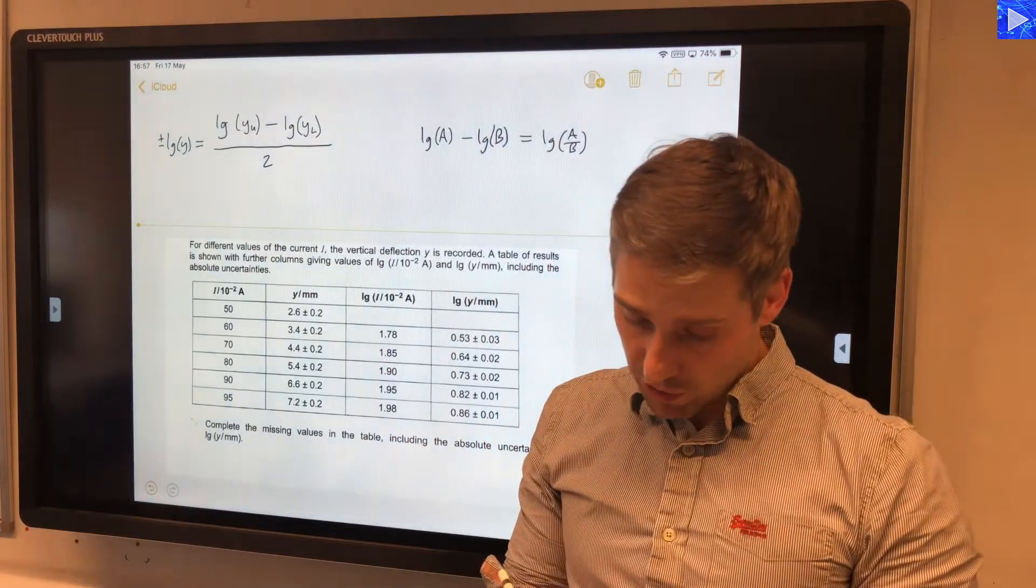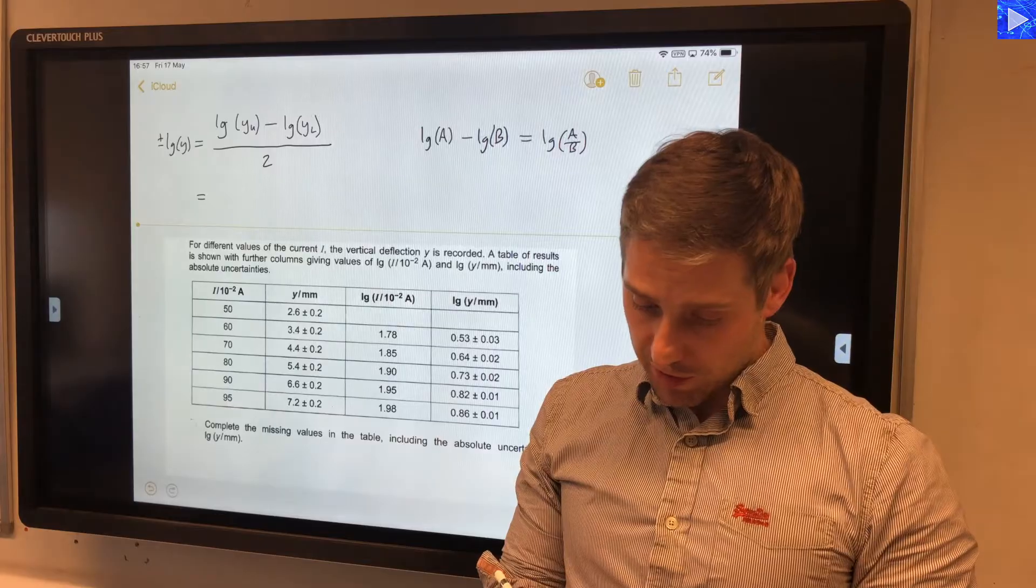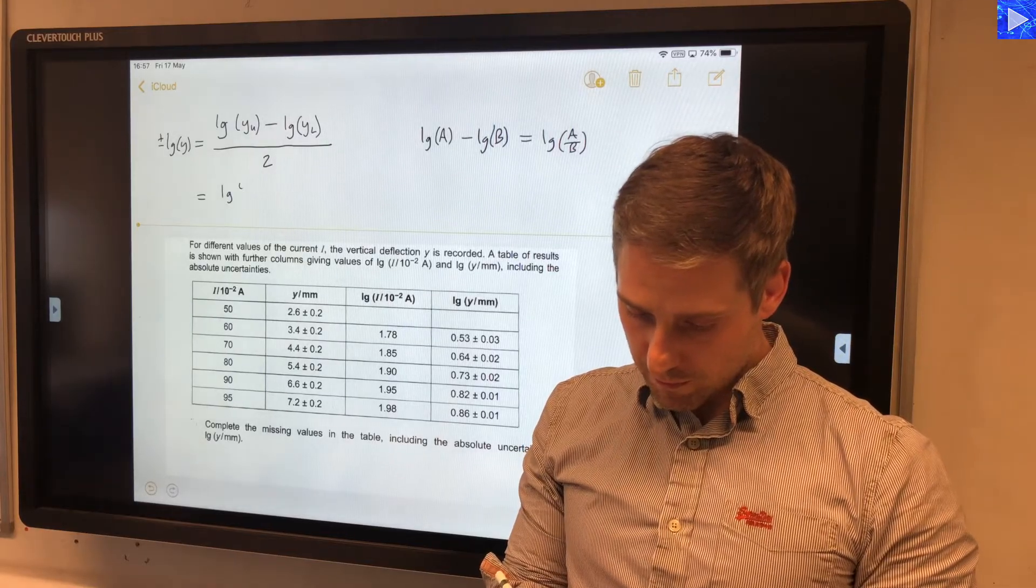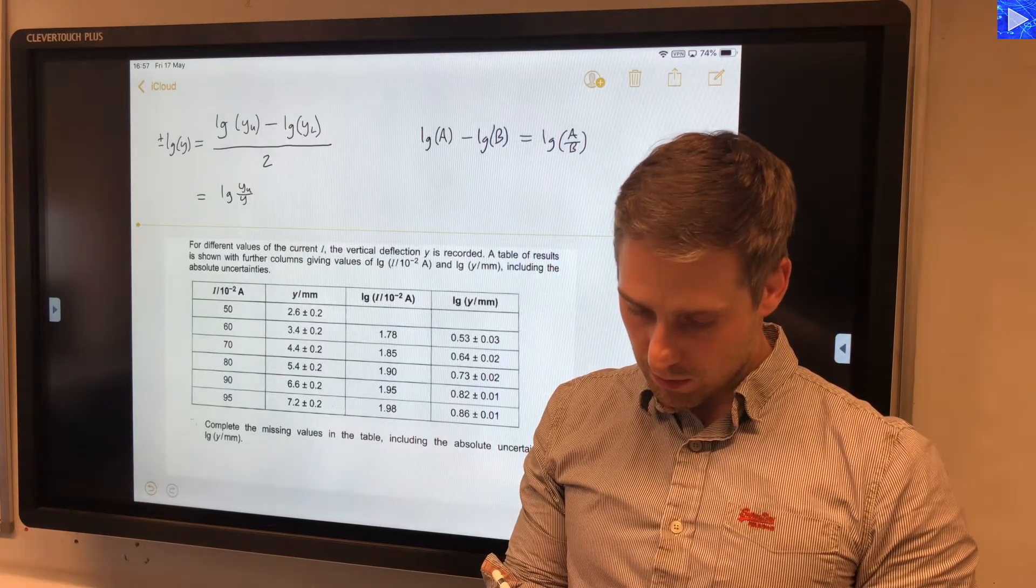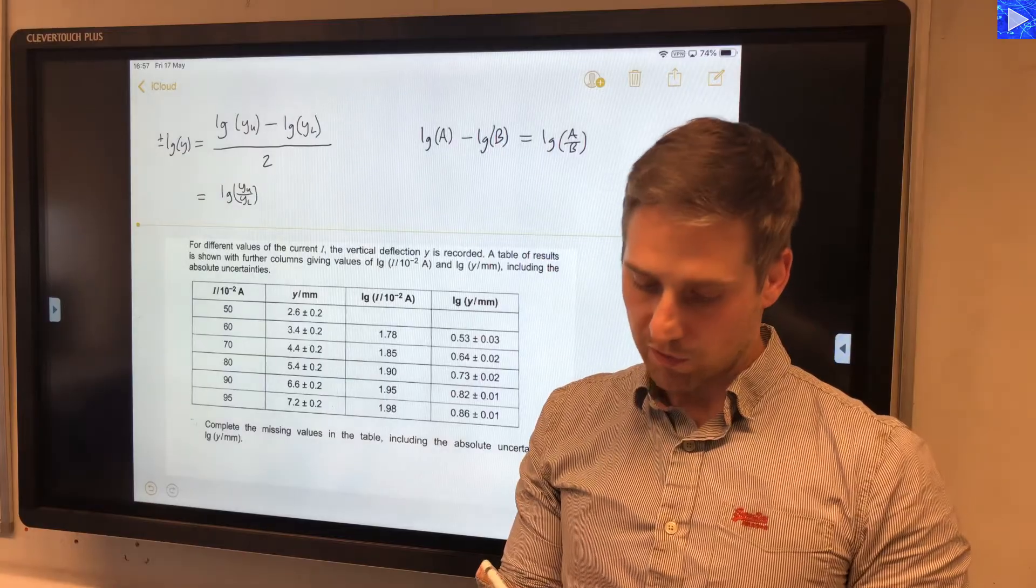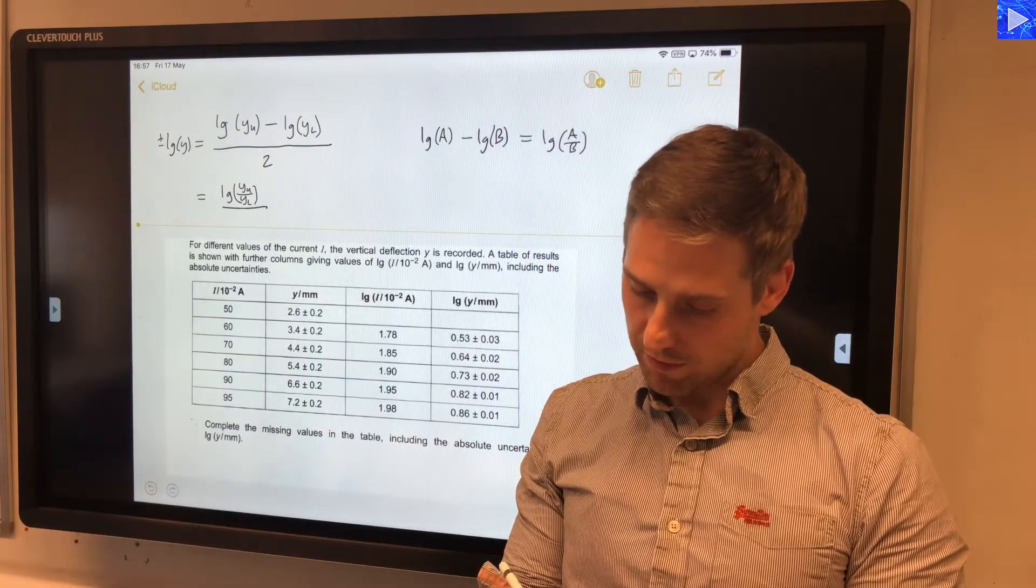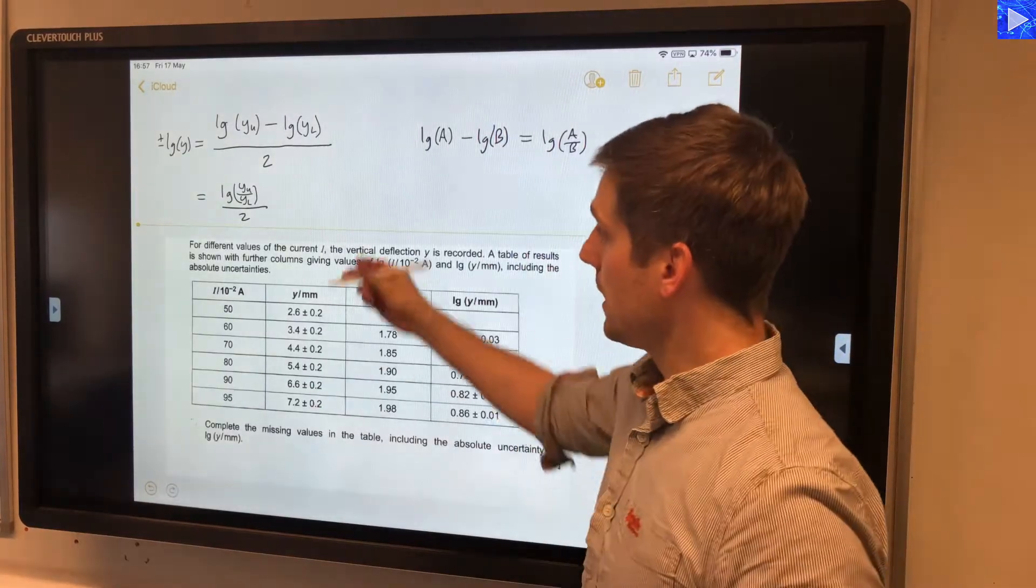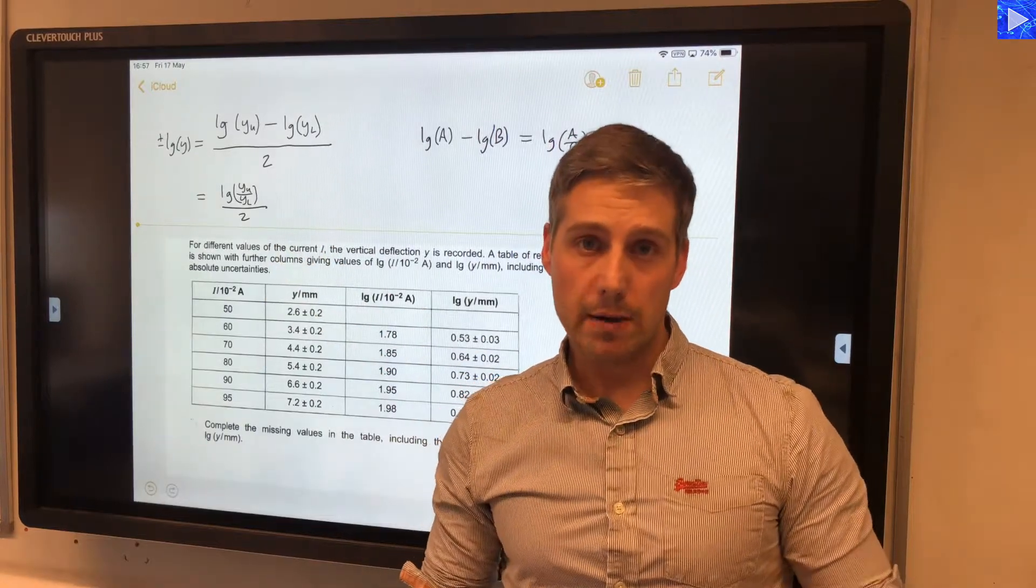It's not a huge simplification, but you could say that this expression becomes log of y_upper over y_lower. Take the log of everything and divide that by 2. That will give you the absolute uncertainty.